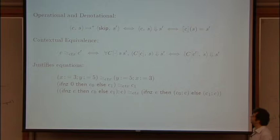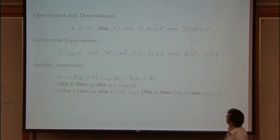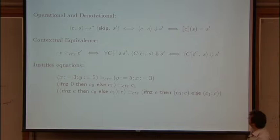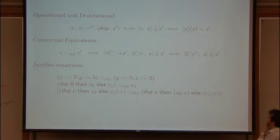Here we're choosing to observe just the final state of running a program. So we say two commands are contextually equivalent just when whenever you have a context, which is a big program with a hole in it, with this dot, then if you plug C into that big context and start it in some state S, that terminates in state S prime just when plugging C prime into the same context, giving it the same starting state, terminates in the same final state.